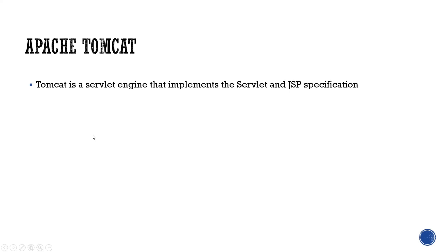What exactly is Apache Tomcat? Tomcat is a servlet engine that implements the servlet and JSP specification. JSP stands for Java Server Pages, and a servlet is a separate term — both are Java-related technologies associated with advanced Java. If you're not familiar, do a little research on what exactly a servlet and JSP specification is. Tomcat can implement Java-based logic written in servlets and JSPs through a kind of application.